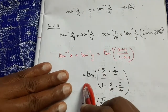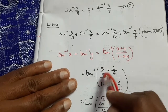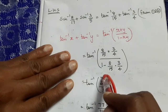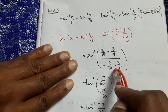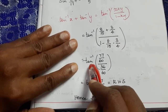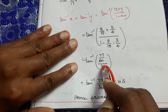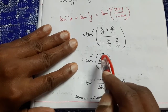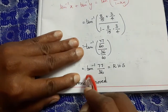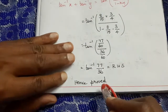LHS = tan⁻¹(8/15) + tan⁻¹(3/4). Using the formula tan⁻¹(x) + tan⁻¹(y) = tan⁻¹((x + y)/(1 − xy)): tan⁻¹((8/15 + 3/4) / (1 − (8/15)·(3/4))) = tan⁻¹((77/60) / (36/60)) = tan⁻¹(77/36) = RHS. Hence proved.